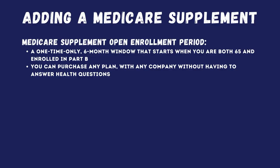John is ready to add a Medicare supplement — a plan offered through a private insurance company that covers some of the gaps left behind by Part A and B. The window for this is called the Medicare supplement open enrollment period. It's a one-time only, six-month window that starts when John is both 65 and enrolled in Part B — for most people, that's October 1st.